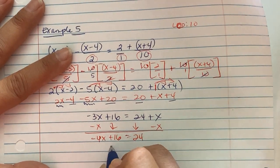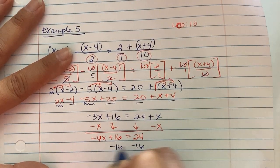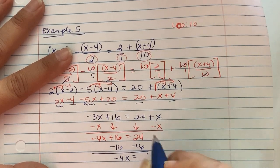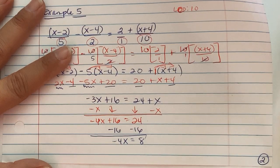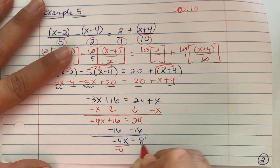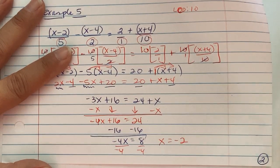Move the 16 by subtraction over. So negative 4x equals, I had 24 but spent 16, I have 8. And then divide by negative 4, so x equals negative 2.